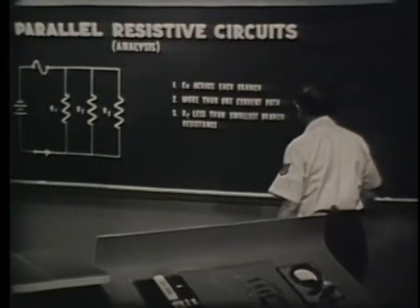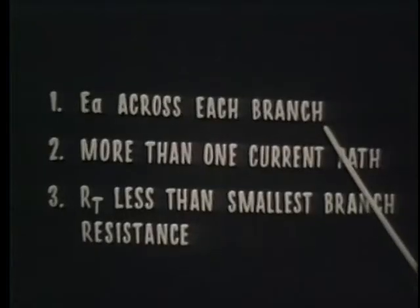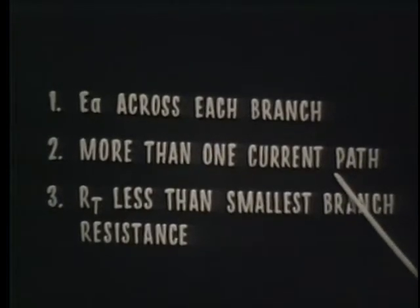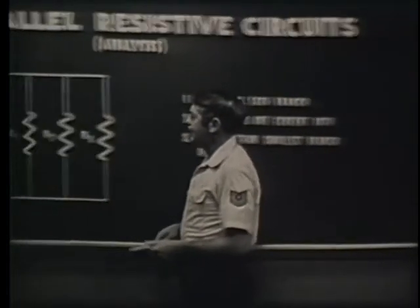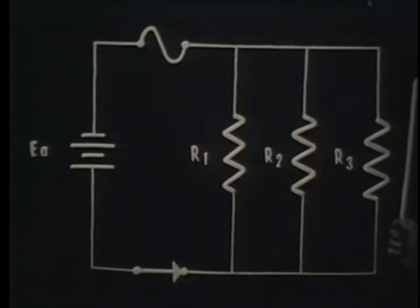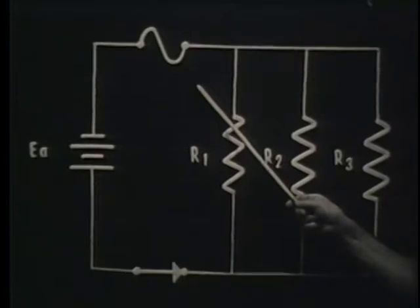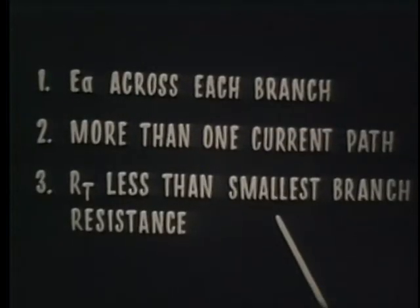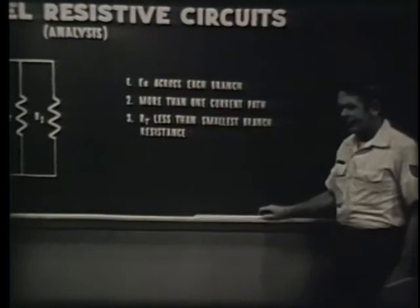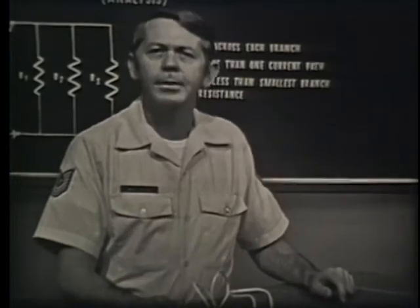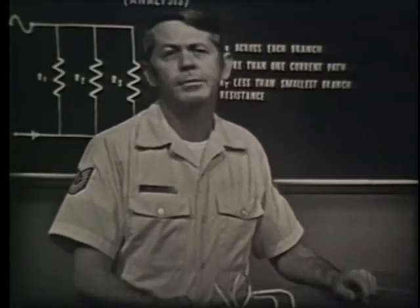Let's go over the important points about the parallel circuit. First, the applied voltage is felt across each branch. There is more than one path for current. The total current divides among the various branches, and adding more resistors decreases total resistance while increasing total current flow. Total resistance is always less than the smallest branch resistance. In the next lesson, we'll talk about power in a parallel circuit. We'll also see how a simple extension cord is nothing more than a parallel arrangement, and how if it's misused, it can be very dangerous.